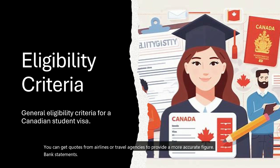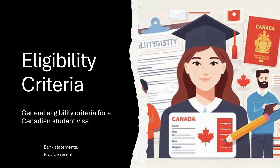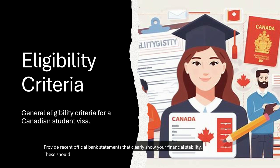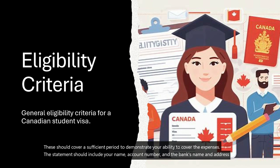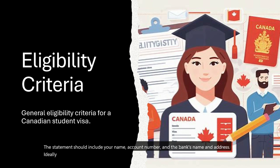Fourth, Bank Statements: provide recent, official bank statements that clearly show your financial stability. These should cover a sufficient period to demonstrate your ability to cover the expenses. The statements should include your name, account number, and the bank's name and address. Ideally, the statements should be in English or officially translated.